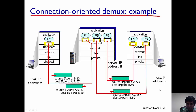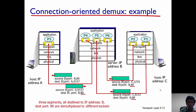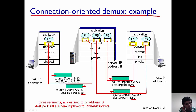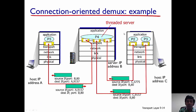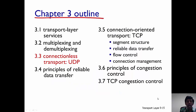All three server processes use destination port 80 because they are using HTTP, yet each is a different socket identified by its own four-tuple. If you want to optimize the server, you could use a threaded server with multi-threading while still maintaining the same connection-oriented demultiplexing. With that, this discussion ends, and in the next lecture we will talk about UDP.